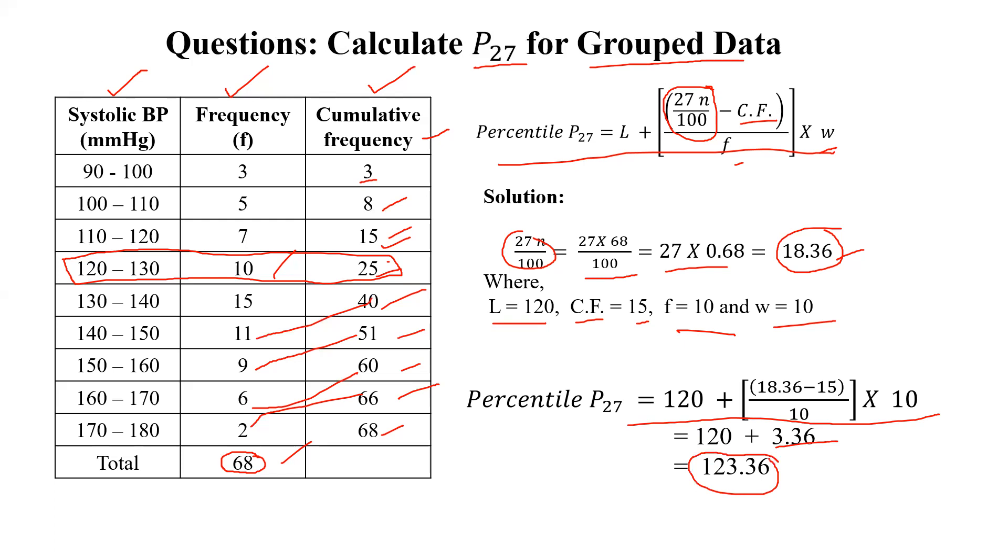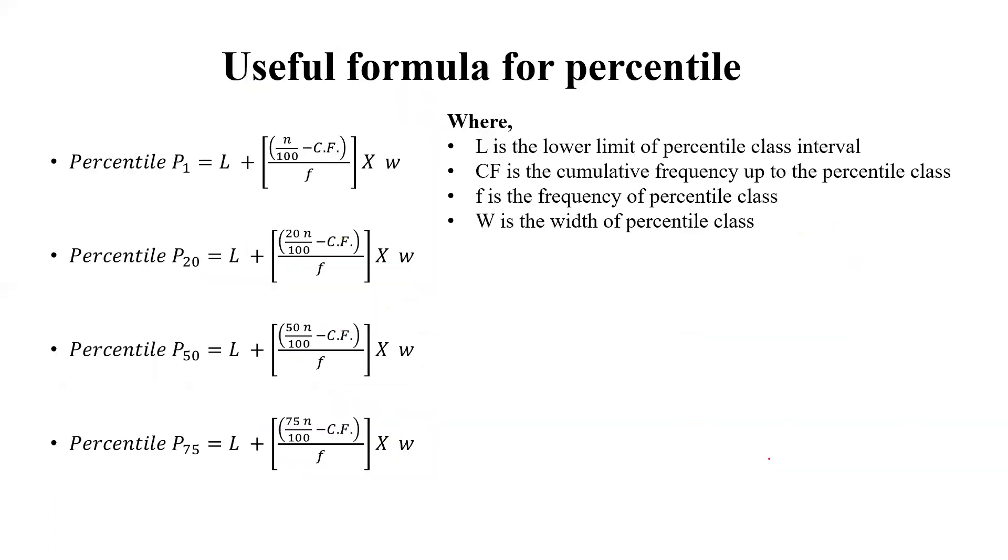So this is the basic and simple steps if we have grouped data, and how to calculate P27th percentile for grouped data. Now, few more useful formulas we need to understand.